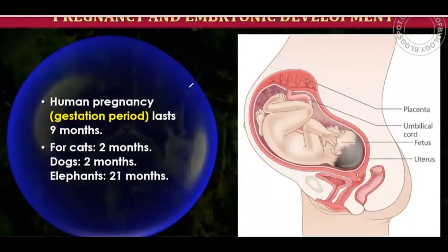Gestation period is the time from implantation up to the delivery of the baby. For humans it lasts nine months. For cats and dogs it is two months, and for elephants it is 21 months. The gestation period varies across different mammals.